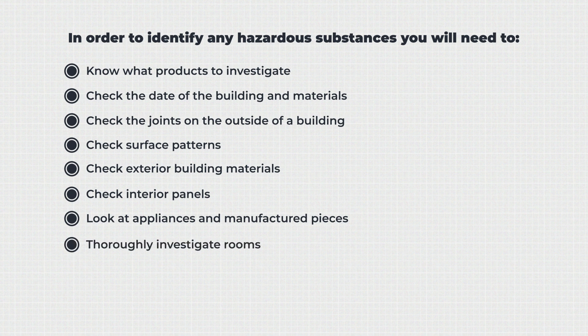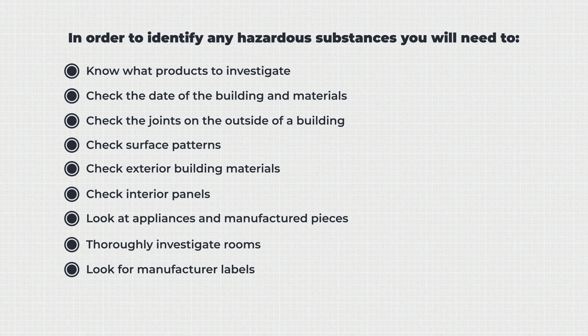Check interior panels — an oily or dusty tile may indicate the presence of asbestos. Look at appliances and manufactured pieces such as ducts, flues and window putty. Thoroughly investigate rooms more susceptible to asbestos use; bathrooms and basements may contain sealants with ACMs. Look for manufacturer labels — the letter codes AC will confirm the presence of asbestos, whereas NC proves it's not present. Also look for bar or QR codes that can be scanned by a smartphone for further information, and consult experts to analyse samples. If there is any concern whatsoever, a qualified surveyor or UK Health and Safety representative should be contacted.